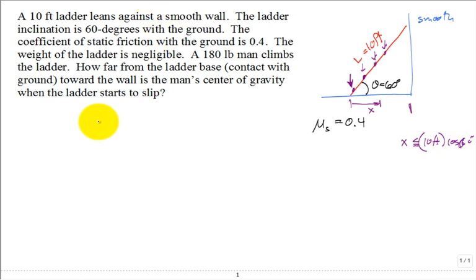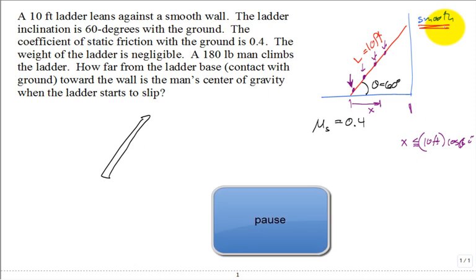Okay, so we do a free body diagram of the ladder. If you do a free body diagram of the ladder, I need to pause and let you do it. This is where you can make an error, so you want to get everything on that ladder. The key word is up here: don't forget that word smooth. Is there any friction between the top of the ladder and the wall? No.